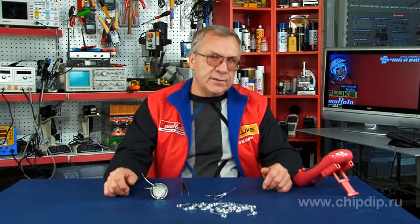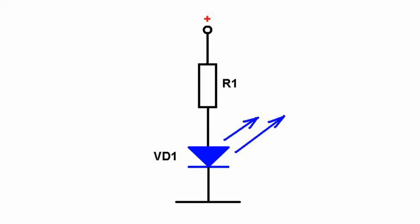As you know, the brightness of an LED depends on the current flowing through such LED. The standard LED connection circuit provides for series connection of a current limiting resistor.